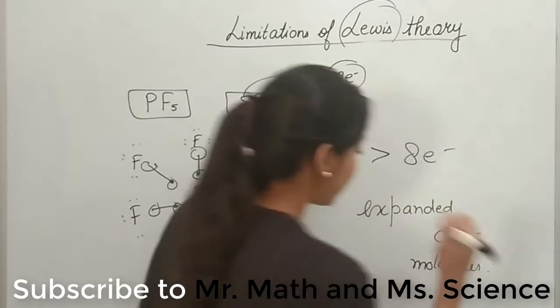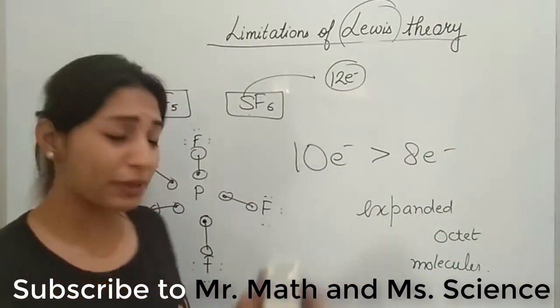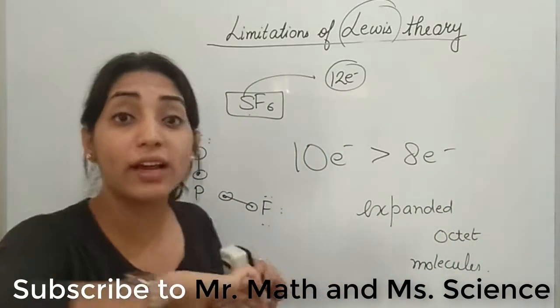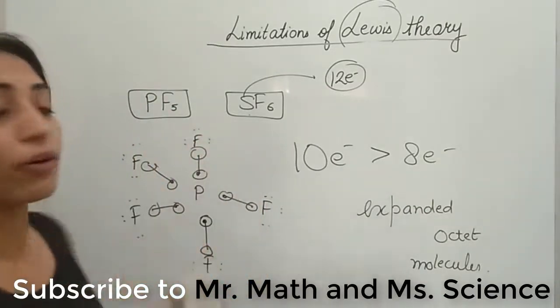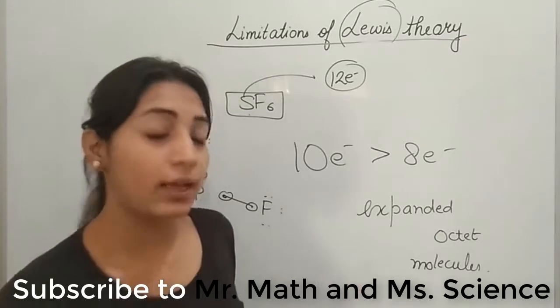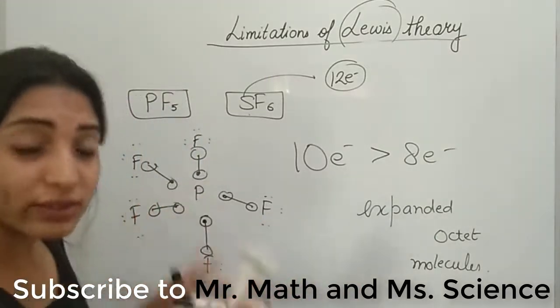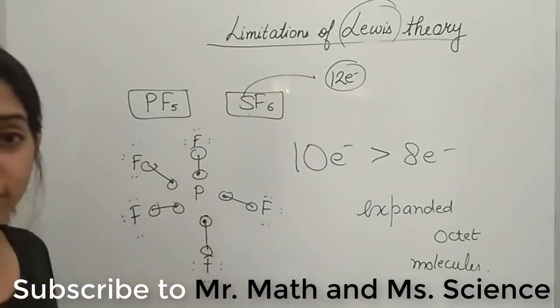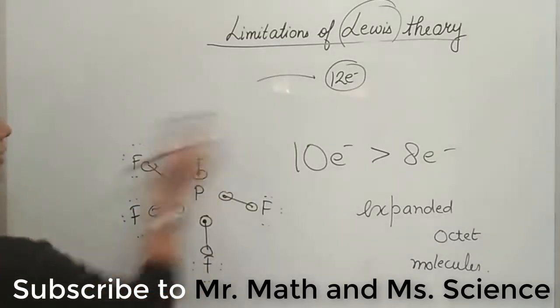He said all of them are exceptions because they are expanding the octet. They are going beyond it. So he called all of them as exceptions. Now we asked why they are exceptions? He was like, he doesn't know. So this was also another problem with the Lewis dot structures.